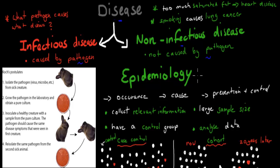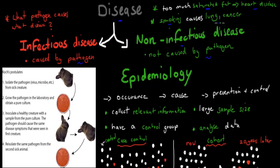With infectious disease it's quite easy — we can use Koch's postulates, which are four steps to figure out what exact pathogen caused what exact disease. With non-infectious diseases, there can be more things that cause a disease and it's not as easy to find out. For example, we know that saturated fat is one of the causes of heart disease, and that smoking is one of the causes of lung cancer. That's harder to find out because you can't just identify a pathogen. One of the ways we do it is through epidemiology or epidemiological studies.